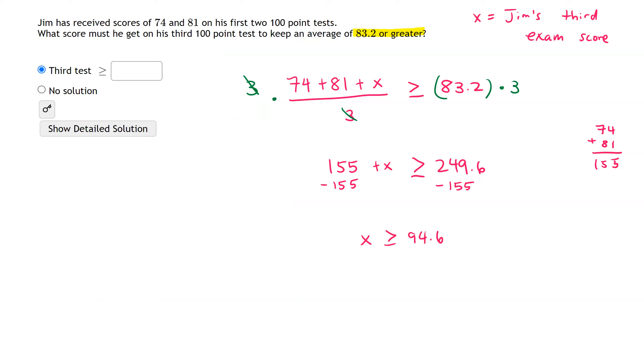So that means that in order for Jim to get an average of 83.2 or higher on his third test, he needs to get a score of 94.6 or higher. That concludes this example.